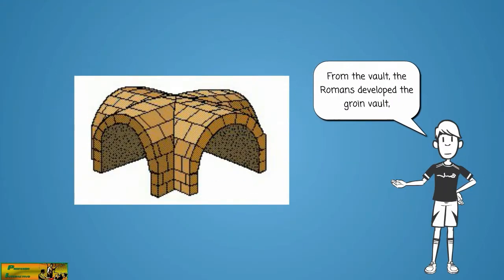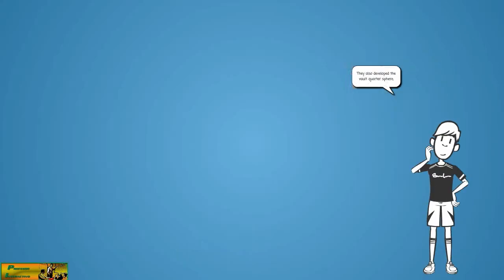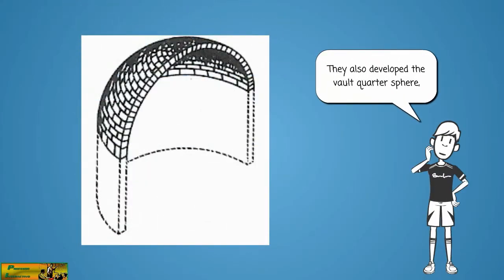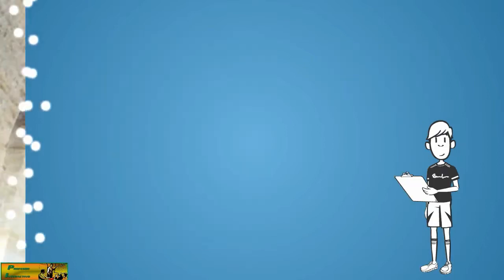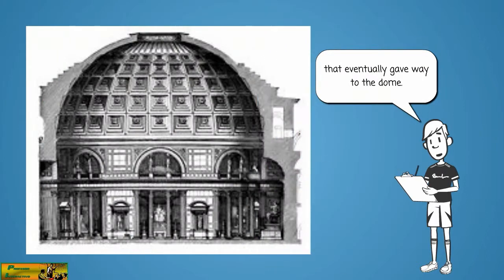From the vault, the Romans developed the groin vault, which corresponds to two intersecting vaults. They also developed the vault quarter sphere that eventually gave way to the dome.